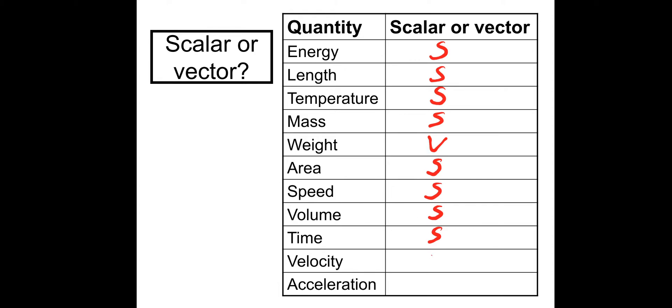Velocity is a vector. Velocity is speed with direction, which makes it a vector. And acceleration is also a vector as well. The direction for acceleration is obviously important. If you're sat in a car and you accelerate in the wrong direction, you can cause a crash. So, acceleration is definitely a vector.